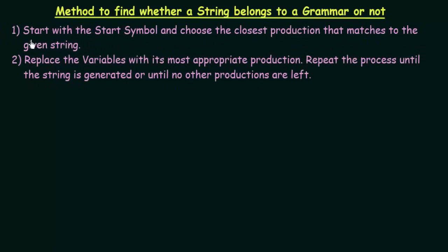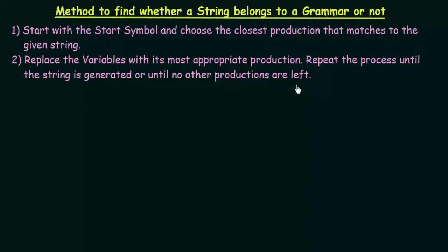Step number one: start with the start symbol and choose the closest production that matches the given string. So we start with the start symbol and we choose the production from the grammar that matches closest to the given string. The second step says: replace the variables with the most appropriate production and repeat the process until the string is generated or until no other productions are left.